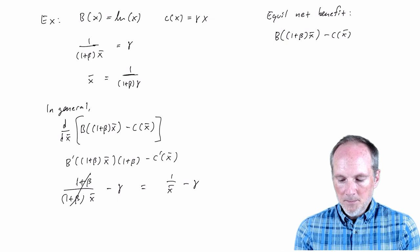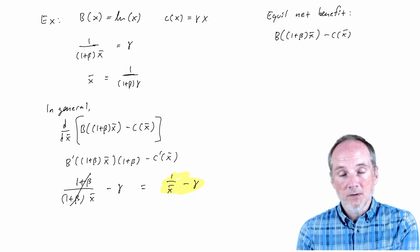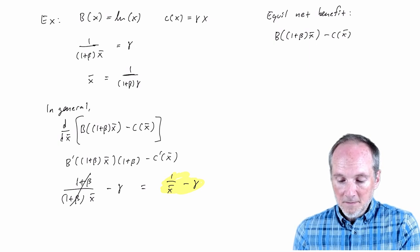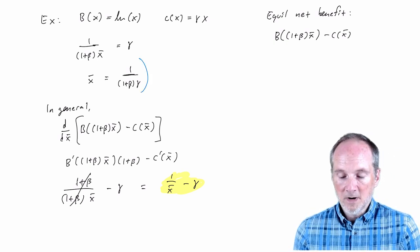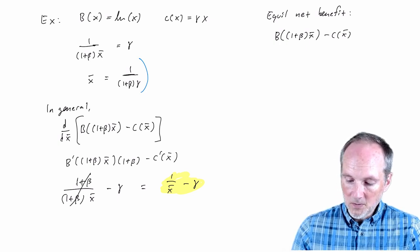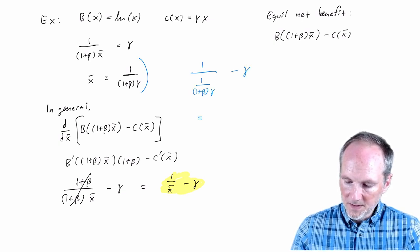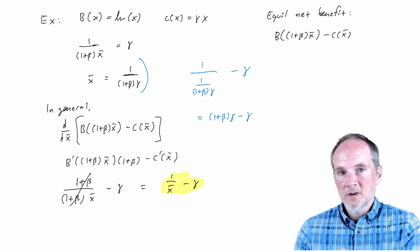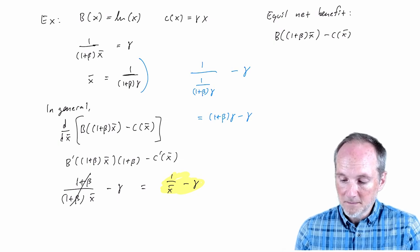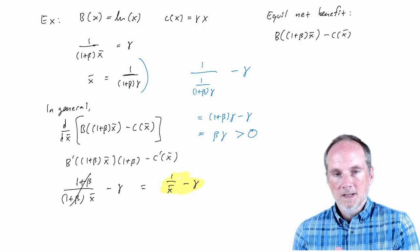So in our example this expression gives us the rate of change of net benefit for both these guys if we were to increase X bar for both of them. I claim that that's positive and you can just plug in our expression for X bar. We already solved for that equilibrium effort level. You can plug that into this derivative. So that's one over, but that's just one plus beta times gamma minus gamma. Now remember if beta is equal to zero there's no externality, so there's nothing to be done. But when beta is positive, this thing is equal to beta times gamma. That's positive.